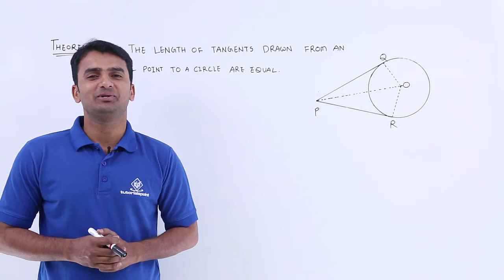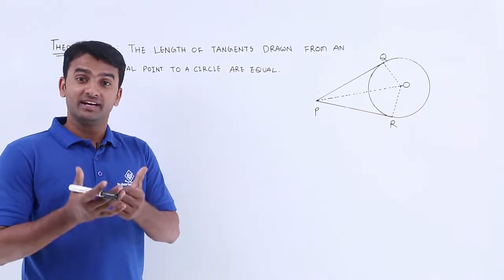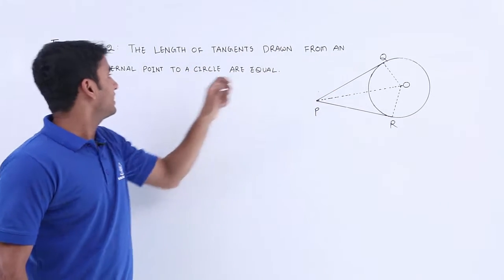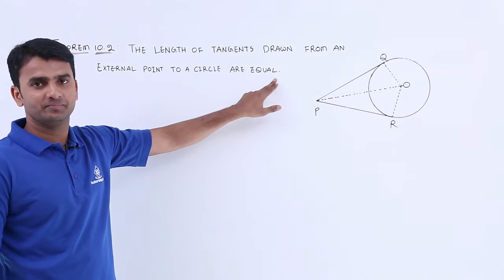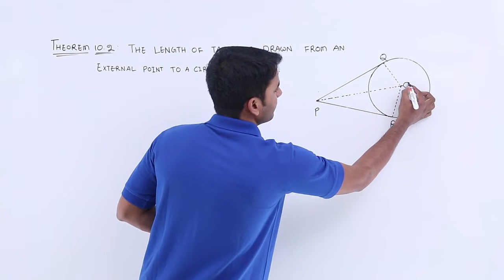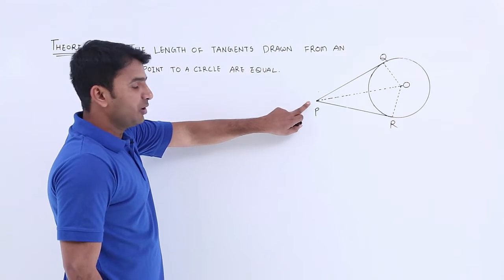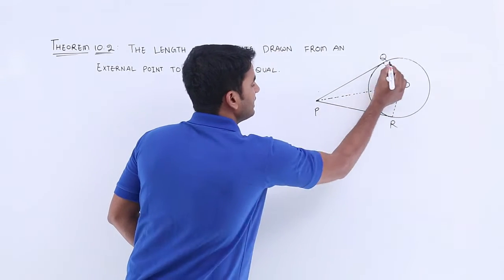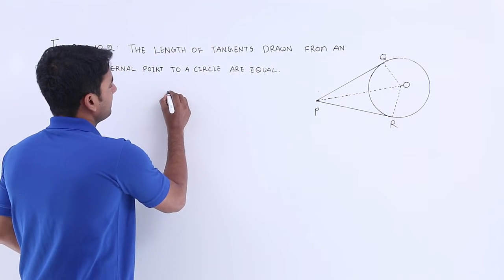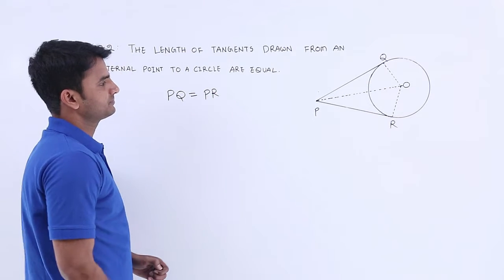Hello everyone, welcome to Tutorials Point. In this video we are going to deal with Theorem 10.2, which states that the length of tangents drawn from an external point to a circle are equal. If you observe this diagram, a circle is given with center O and external point P. From external point P there are two tangents, PQ and PR, and we have to prove that PQ is equal to PR.